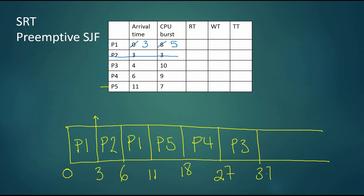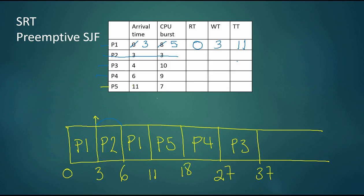Once the Gantt chart is correct, calculating response time, wait time, and turnaround time is straightforward. P1 arrived at time zero and first got on the CPU at time zero, so P1's response time is zero. P1 finished at time 11, giving a turnaround time of 11, and P1 waited three additional time units after being preempted. P2 arrived at time three, got the CPU right away, never waited, and finished at time six — active for three time units.